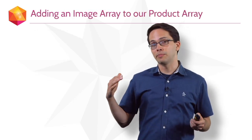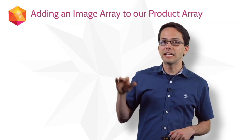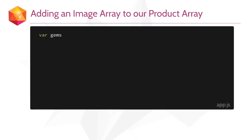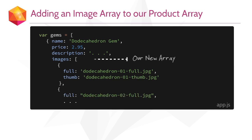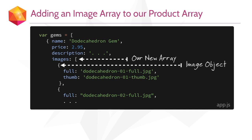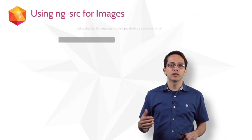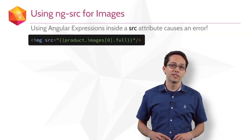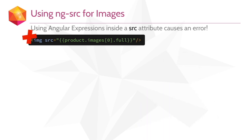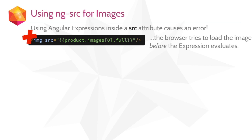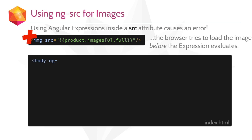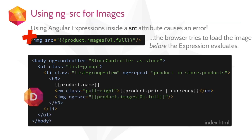Each of our products has a bunch of pictures associated with it, so we need to add that to our dataset. We now have an images property which contains a new array. Inside of that array, there are a series of image objects, each of which contains a full image and a thumbnail image. To display the first image in a product, we might write product.images.full. If we took that and put it as an expression inside the source attribute of an image tag, it wouldn't work — the browser tries to load the image before the expression evaluates. So to print out this image, we need to use the ngSrc directive.